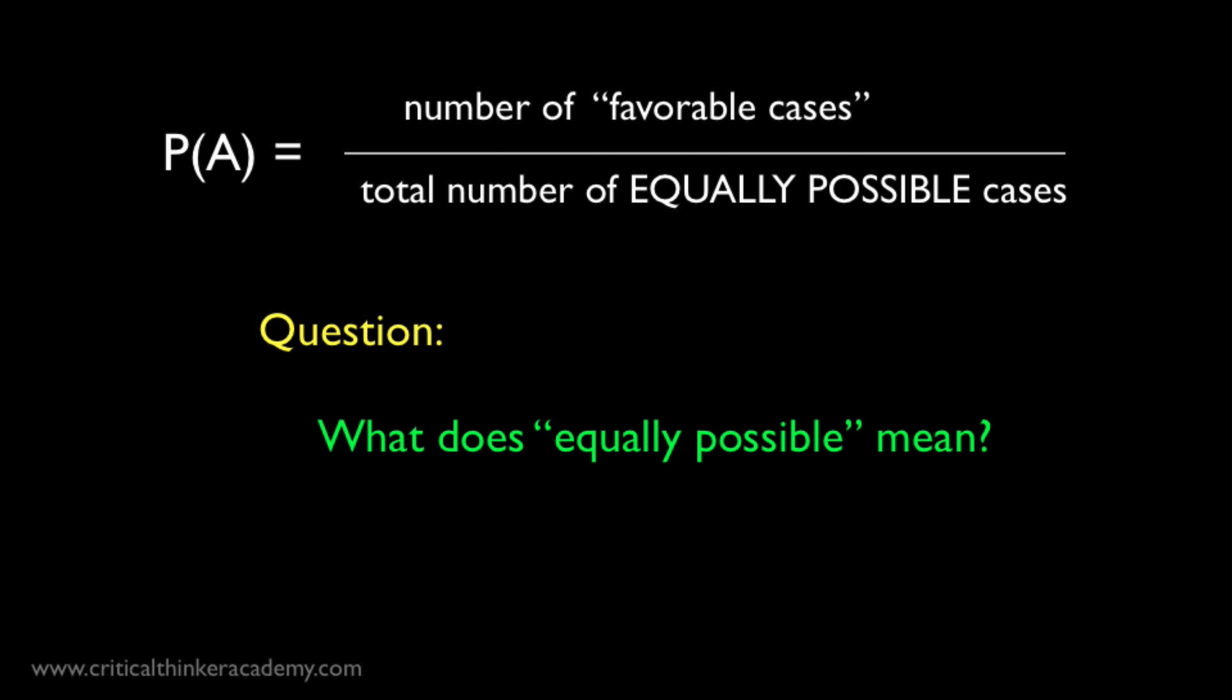What exactly does equally possible mean in general? If we just mean equally probable, then there's a risk of circularity, since our definition of probability is now invoking the concept of probability in the definition.